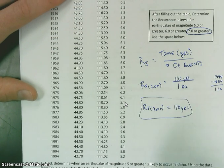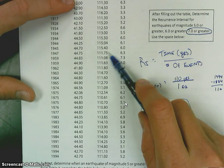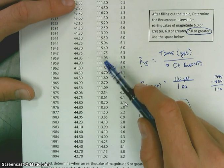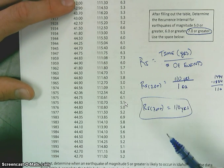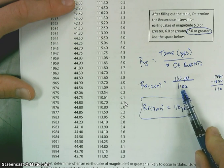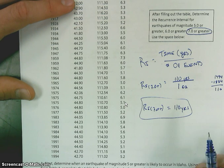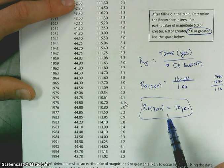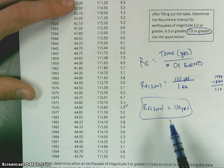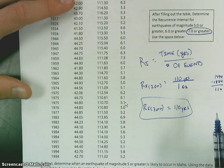What does that number actually mean? It means that in Idaho, at this location, we can expect an earthquake of 7.0 or greater about once every 110 years. That's essentially what a recurrence interval is. Now, I've got to caution you — we cannot use these to forecast. We can't say that we're due to have one, but we can say this is about how often they happen, about their frequency.